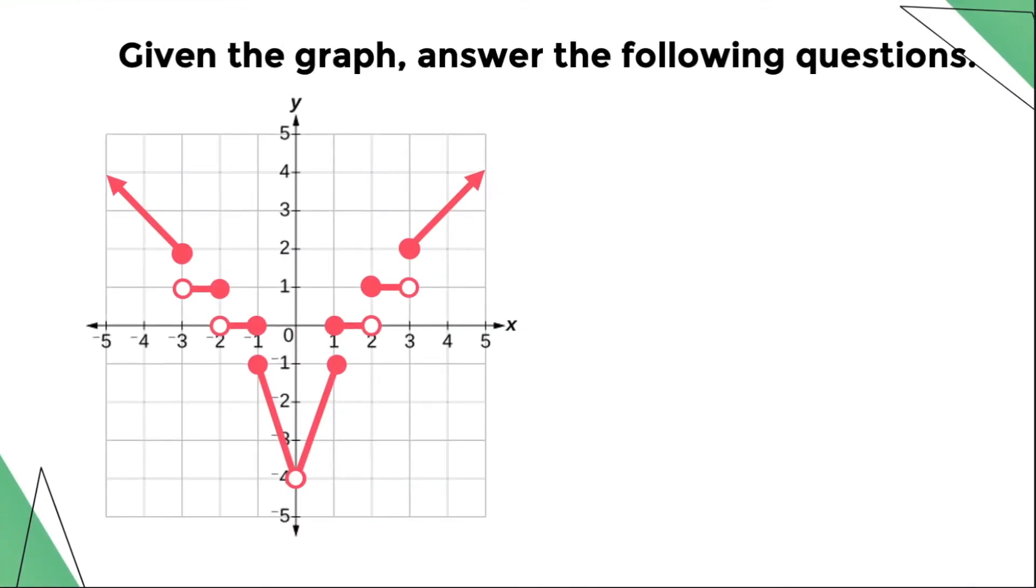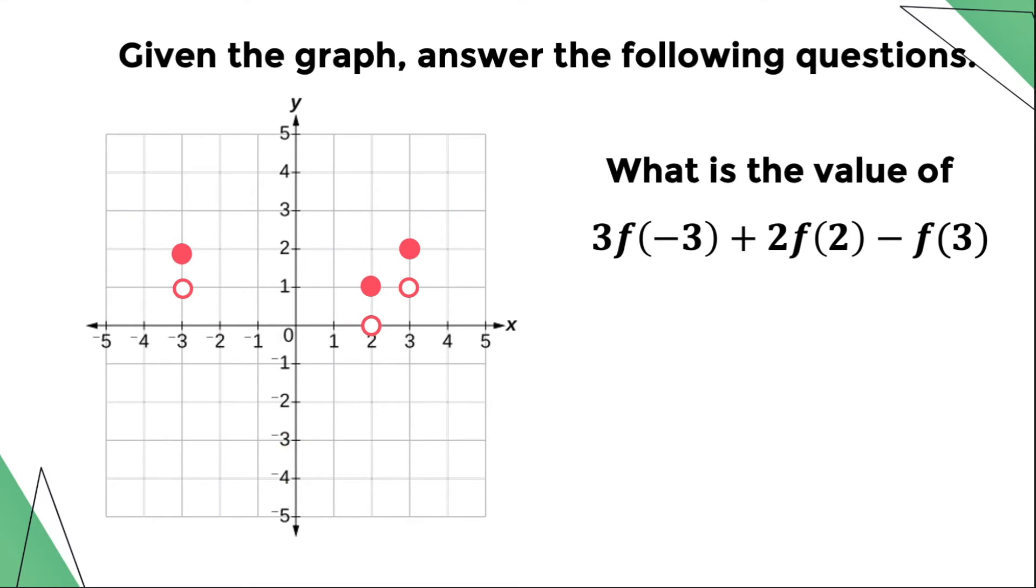For this example, we need to get the values of f(-3), f(2), and f(3) before performing the indicated operations. The values of f(-3) is positive 2, f(2) is positive 1, and f(3) is positive 2. Simplifying it further, the value of the given expression is positive 6.